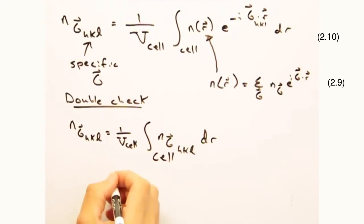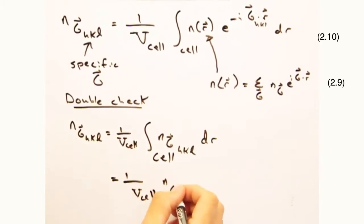We also saw this in the delta k equals g constructive interference condition from lecture. Now after some plug and chug, we can see that we can get n_g_hkl equals n_g_hkl. So mathematically, we're on the right track.